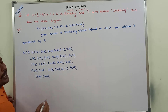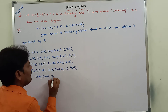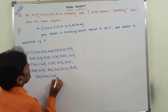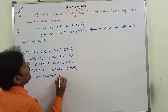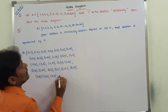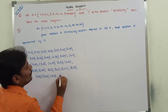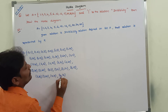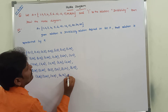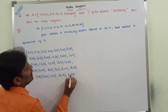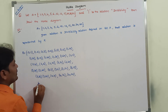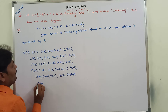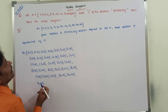Next I am taking element 4: 4 divides 4. 4 does not divide 5. 4 does not divide 6. 4 does not divide 10. 4 divides 12. 4 divides 20. 4 does not divide 30. 4 divides 60.